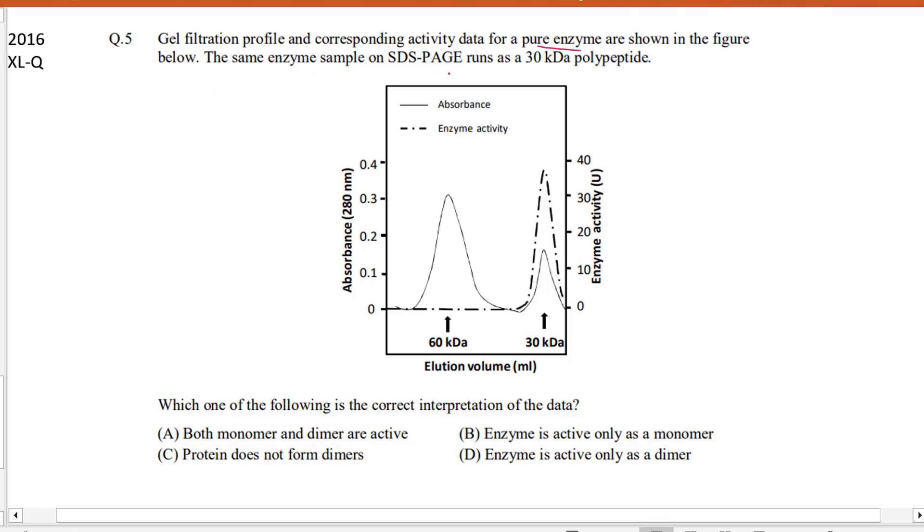So 30 kilodalton is the monomeric form of the protein. The monomeric form of the protein will be 30 kilodalton. Now this solid line shows the absorbance of the protein and this dotted line will show the enzymatic activity of the protein.